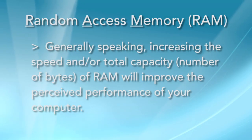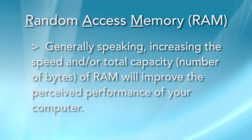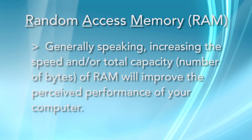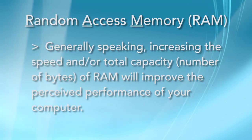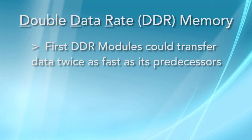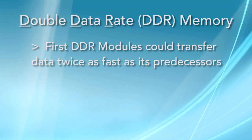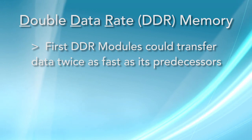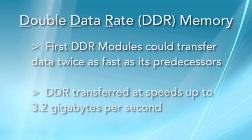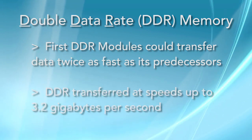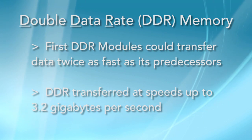As with most parts of your computer, the faster the data can be transferred within the system, the quicker your computer will appear to run. When DDR memory first came on the market, it could transfer data twice as fast as its predecessors, up to 3.2 gigabytes per second.